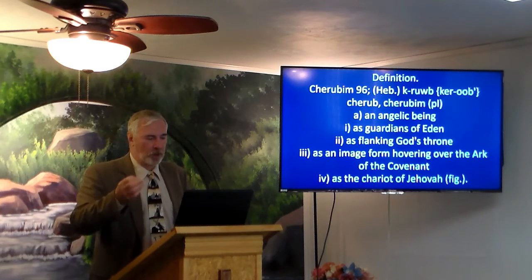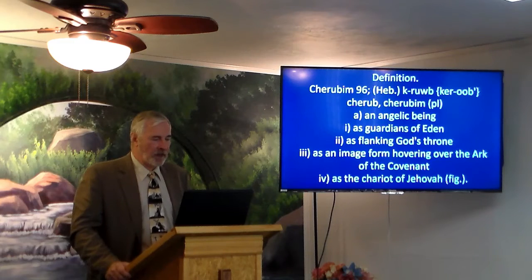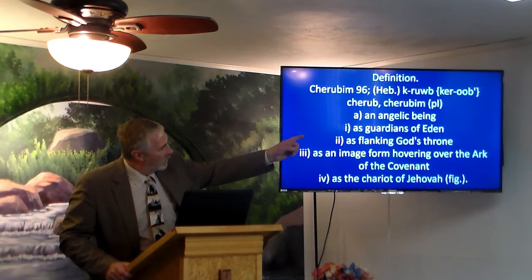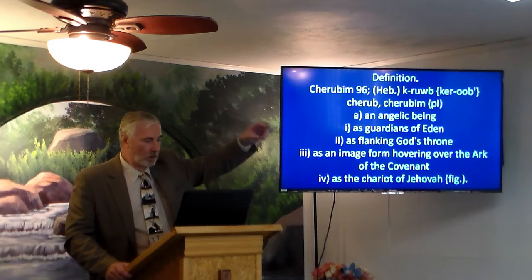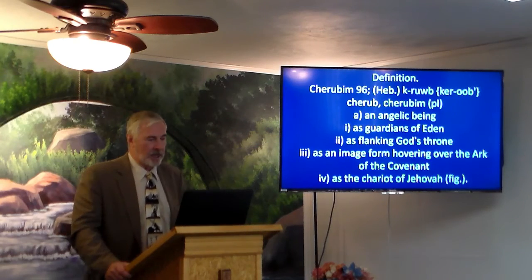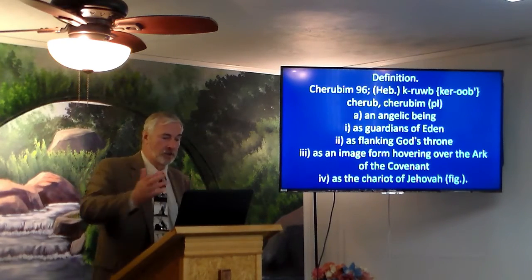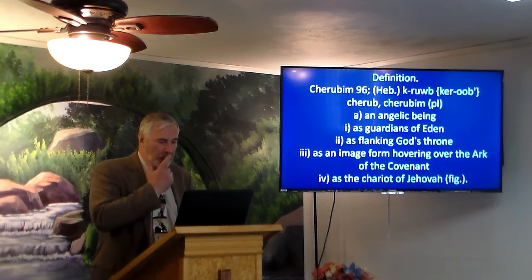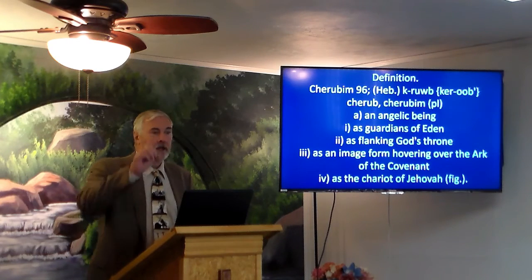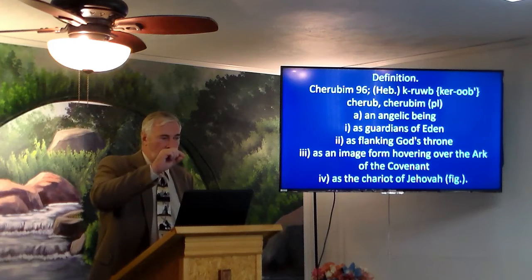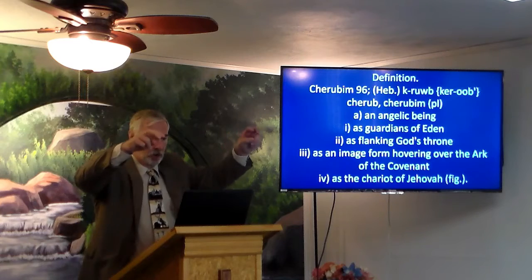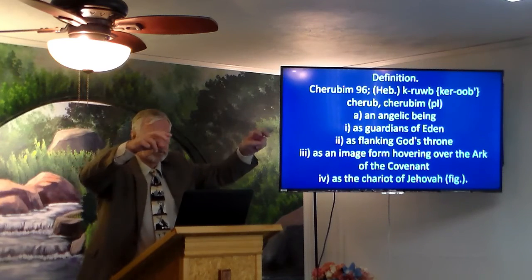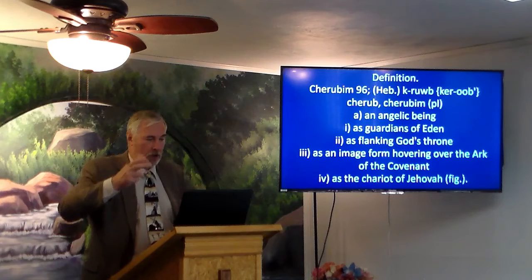Cherubim are used as guardians of Eden — placed at the gate so Adam and Eve couldn't get back in — and as flanking God's throne. In Revelation 7 and other passages, there are four cherubim at the throne. What are they doing? They're guarding the throne.